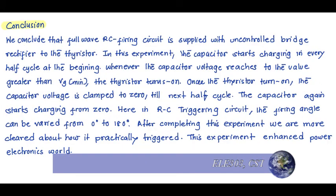We conclude that the full wave RC firing circuit is supplied with an uncontrolled bridge rectifier to the thyristor. In this experiment, the capacitor starts charging in every half cycle at the beginning. Whenever the capacitor voltage reaches a value greater than Vg minimum, the thyristor turns on. Once the thyristor turns on, the capacitor voltage is clamped to zero till the next half cycle, when the capacitor again starts charging from zero. In the RC triggering circuit, the firing angle can be varied from zero to 180 degrees.